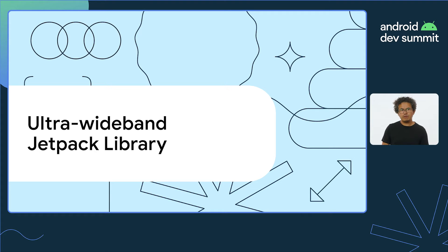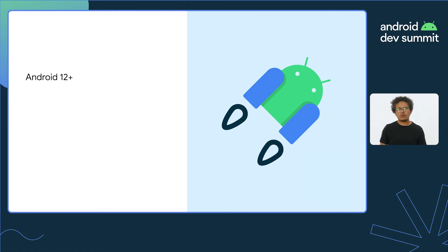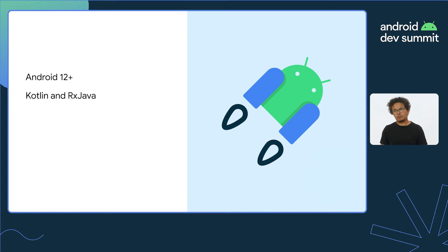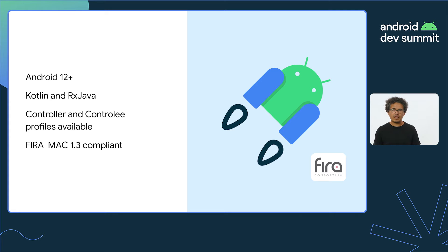Now that we know a bit more about UWB, let's take a look at our new Jetpack library to see what it can do. We launched the alpha version of the library earlier this year. It currently works on devices with Android 12 or newer, enables phone-to-phone or phone-to-IoT device use cases, and like all our Jetpack libraries, plays well with Kotlin. It comes ready with UWB controller and controlee ranging profiles, which we'll talk about later.